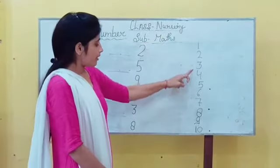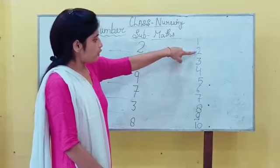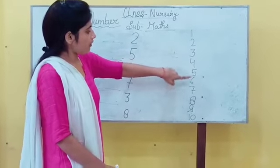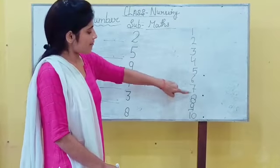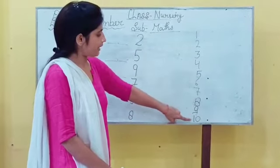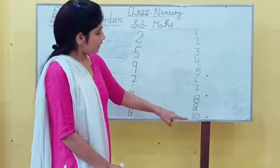firstly, count the number 1, 2, 3, 4, 5, 6, 7, 8, 9 and 10. Count these numbers 1 to 10.